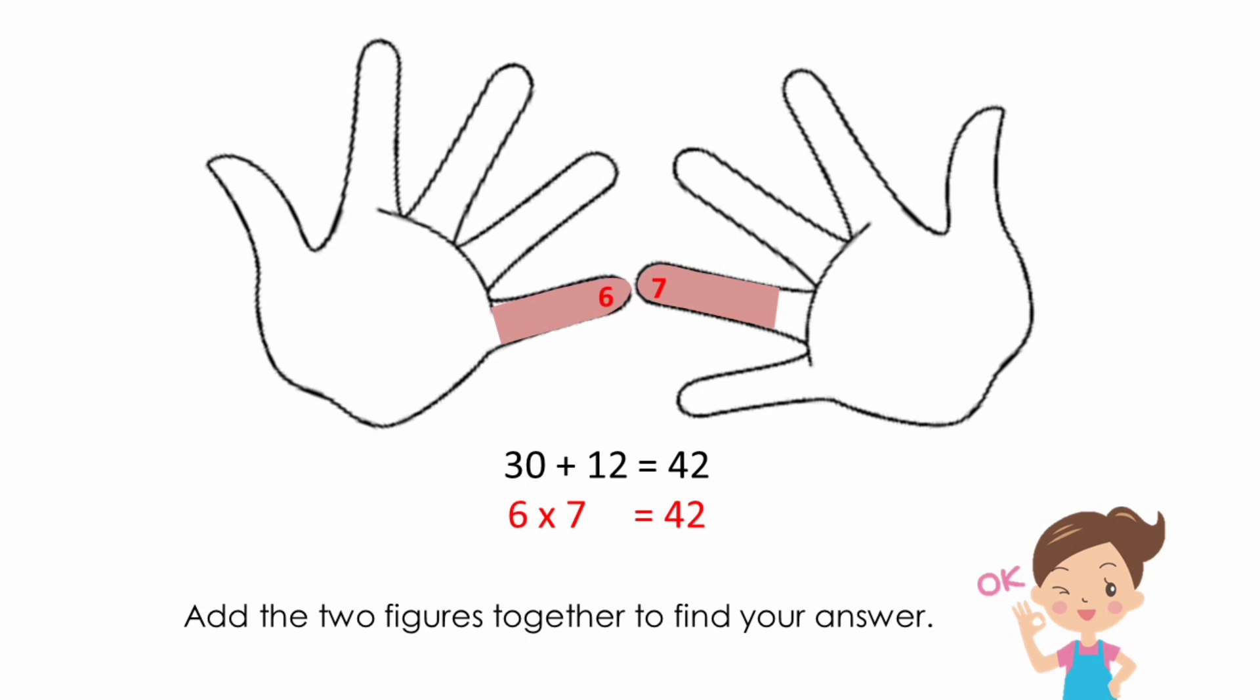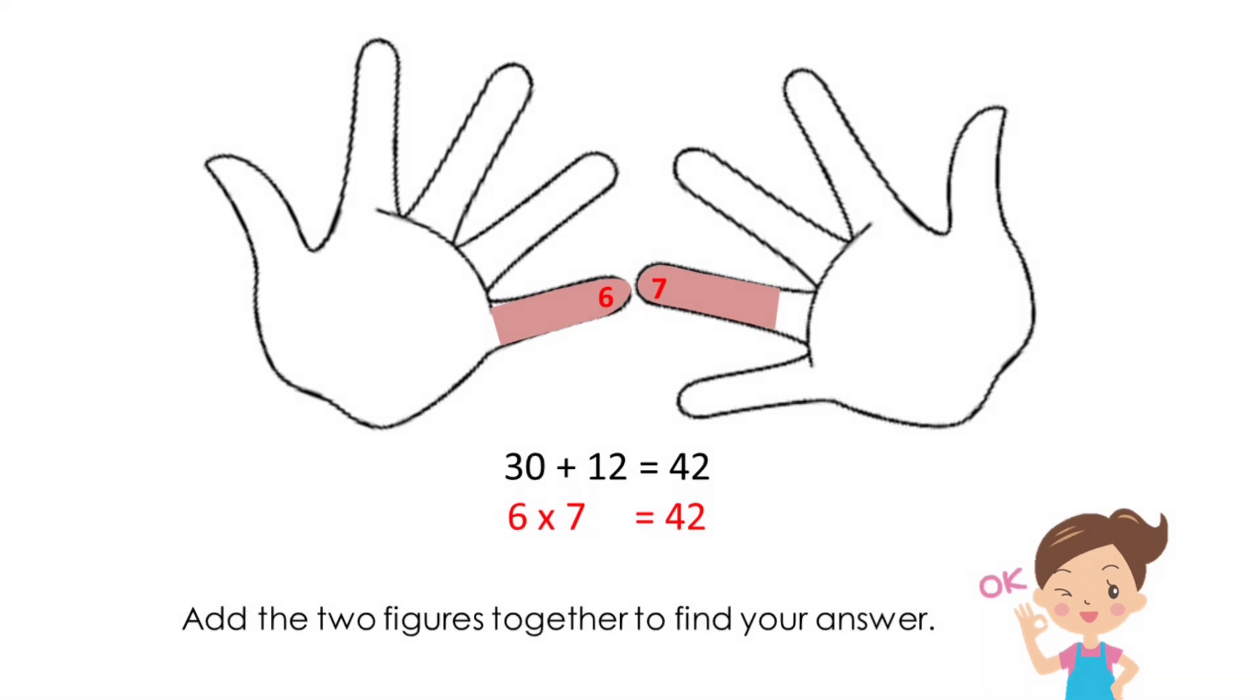Add the two figures together to find your answer. In this case, you will add 30 to 12 for a total of 42. The answer to 6 times 7 is 42.